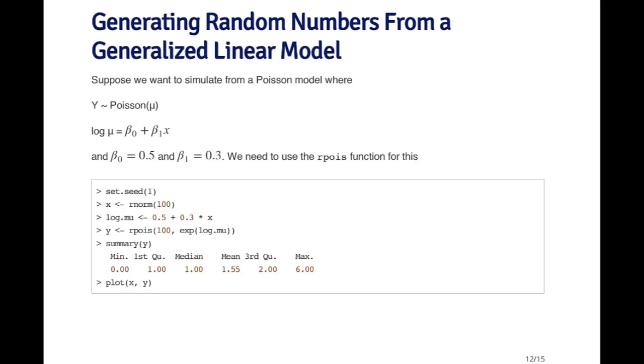We need to use the rpois function for this. So we first set the seed, as always. We generate our predictor variable x, which has a standard normal distribution. Then we generate our linear predictor log mu, which is just adding the intercept and the slope coefficient times x. So that's the log of our linear predictor.